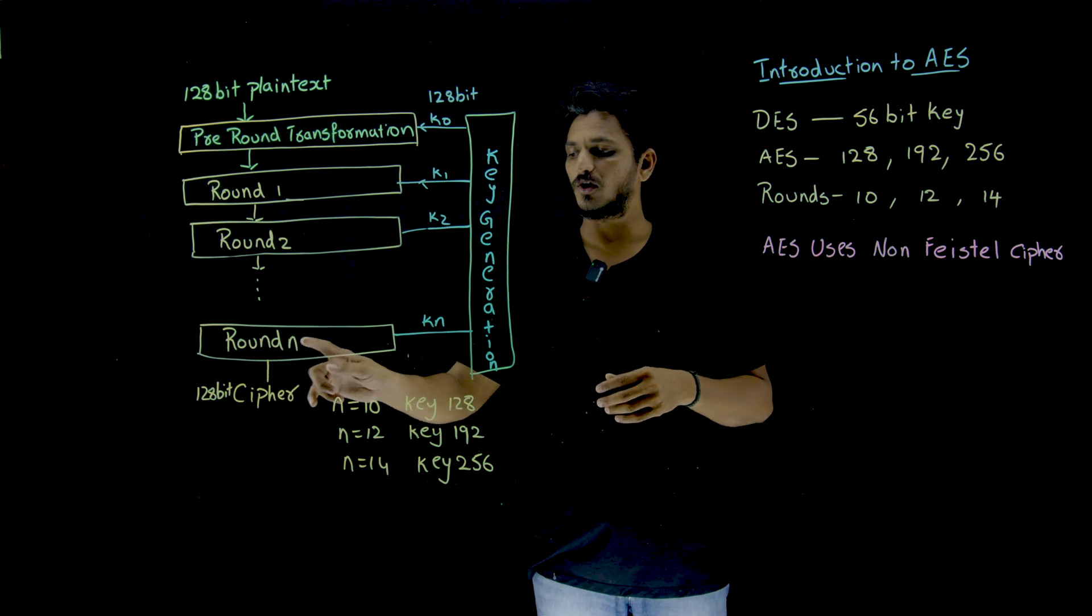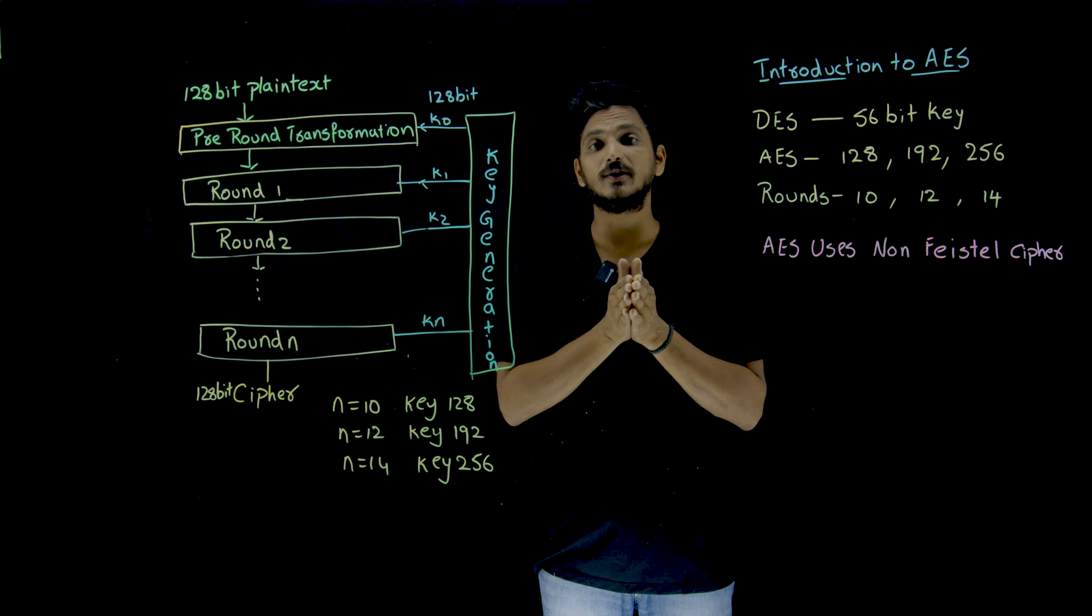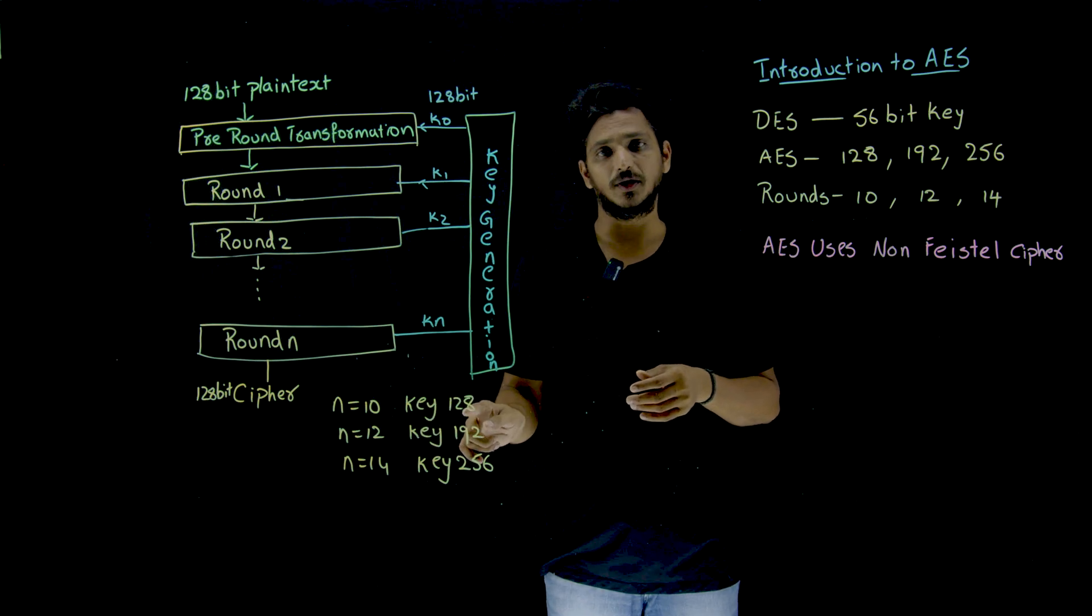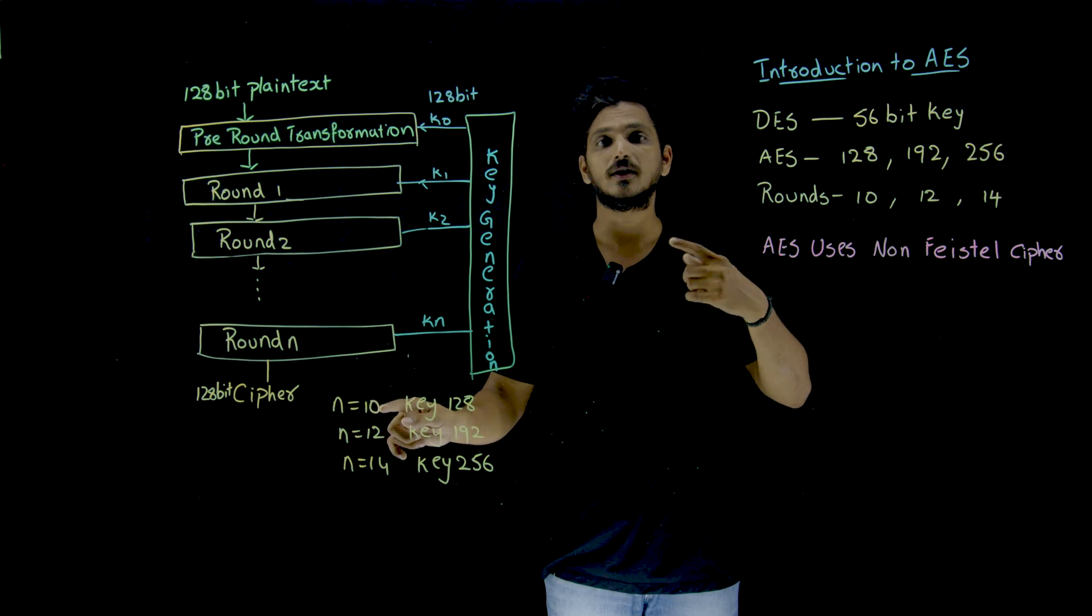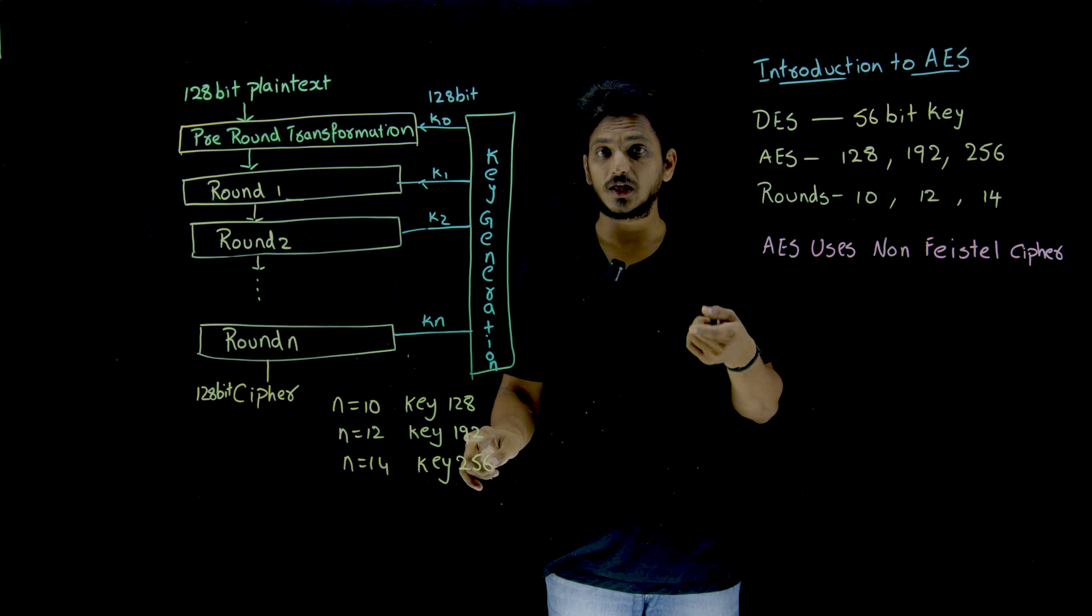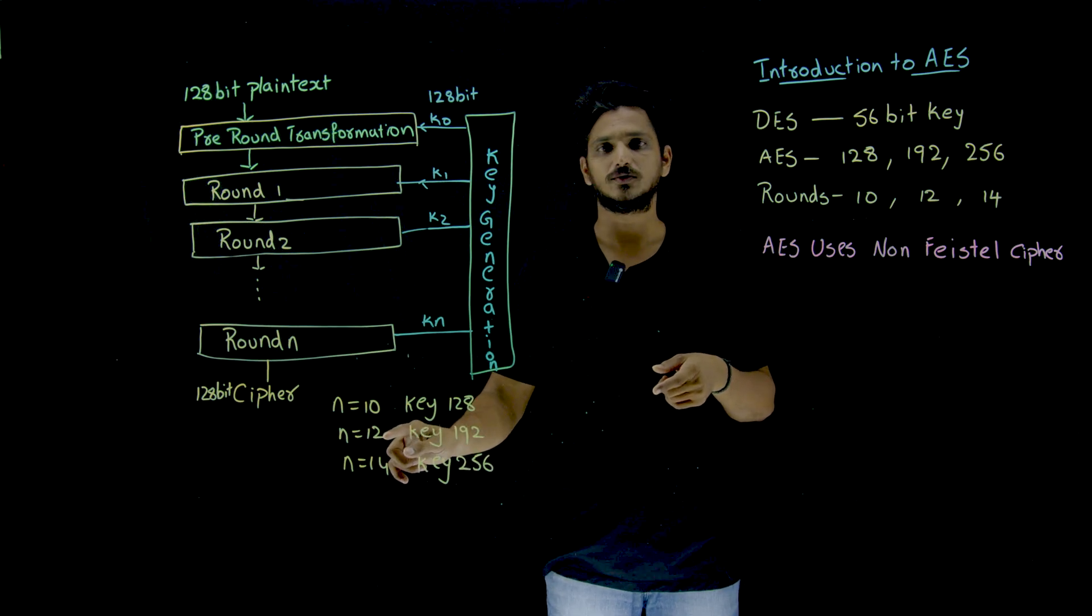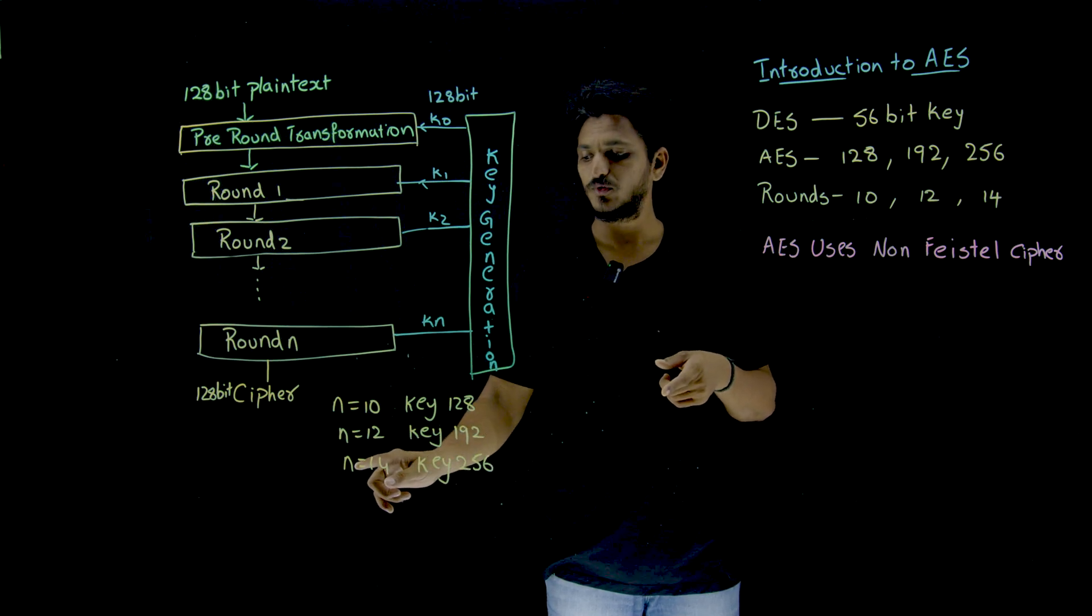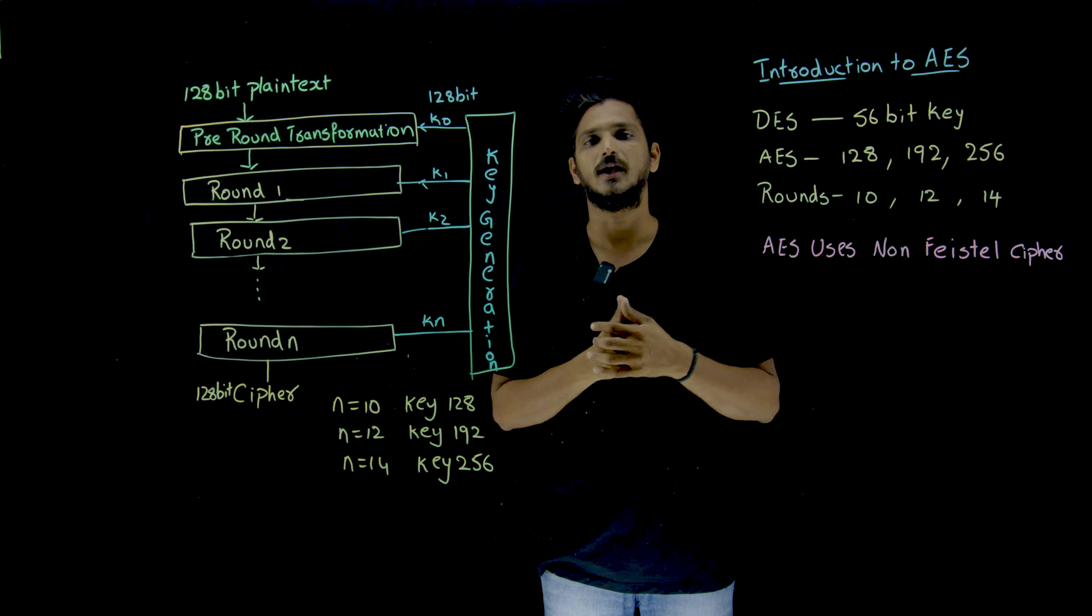Now, try to understand what is round n means. See here, in AES, we are having three versions. If the key size is 128-bit, you go with n is equal to 10 rounds. If you consider the key size as 192, you go with n is equal to 12 rounds. If you take key is equal to 256, you go with 14 rounds. These are the three different versions available in AES.